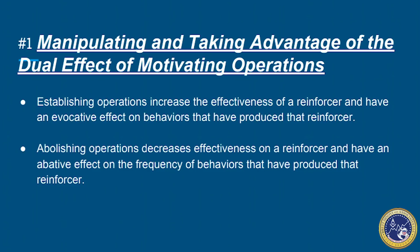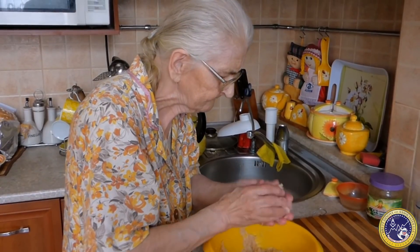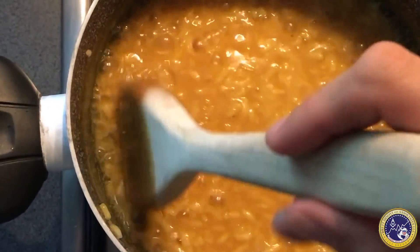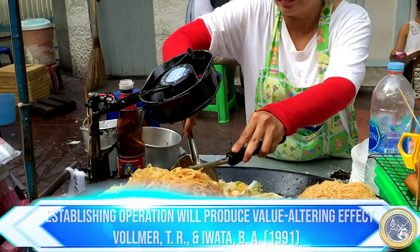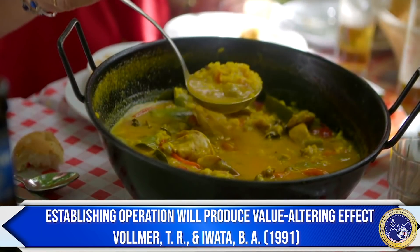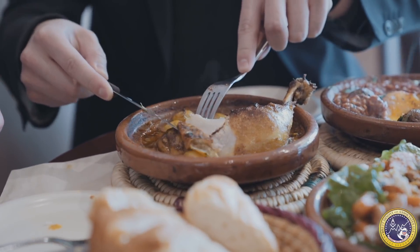The first one I want to discuss is manipulating and taking advantage of the dual effect of motivating operations. Establishing operations increase the effectiveness of a reinforcer and have an evocative effect on all behaviors that have produced that reinforcer in the past. For example, if every time you go to Sunday dinner at your grandma's she yells at you for not eating enough, you could refrain from eating prior to going. Depriving yourself of food will have an establishing operation which produces a value-altering effect that increases the reinforcing effectiveness of food, as shown by Volnera and Iwata. This behavior-altering evocative effect will increase the current frequency of all behaviors that have been reinforced by food in the past.